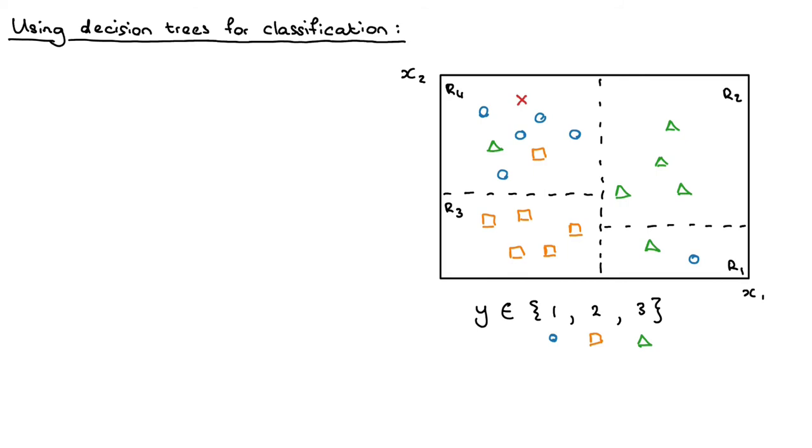So how can we formally write down this intuition that we want to assign the test point in a specific region to the class that occurs most often in that specific region?